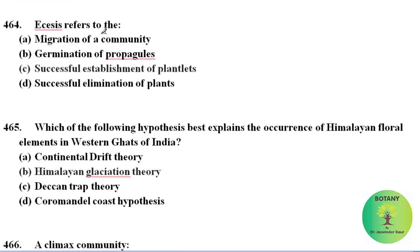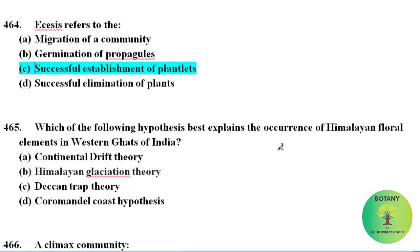Ecesis refers to the successful establishment of species — here, the correct answer is the successful establishment of plantlets. The occurrence of Himalayan floral elements in the Western Ghats of India is best explained by the Himalayan glaciation theory.